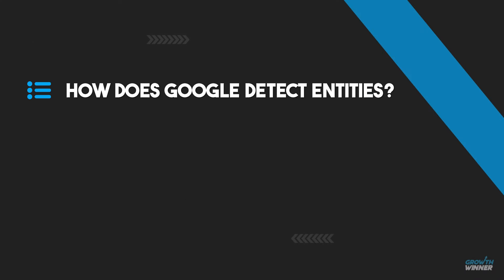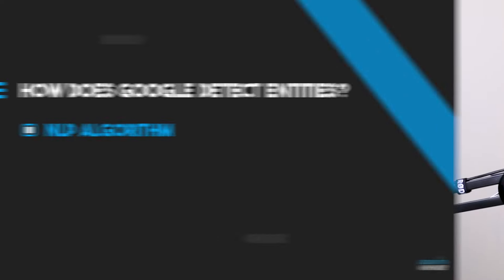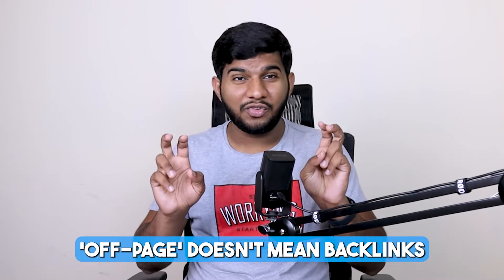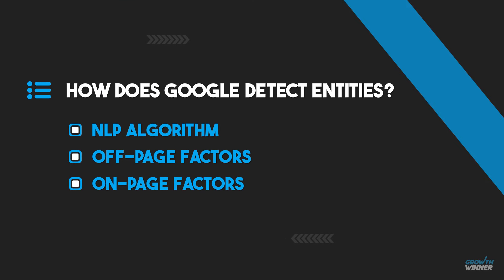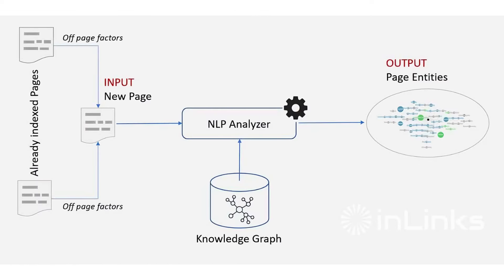How does Google detect entities? Number one, an NLP algorithm — similar to its API that detects almost 100% of people, places, and organizations, but very few concepts or things. Number two, off-page factors. This means Google considers what entities are mentioned on other pages of your website to understand the context better, helping Google figure out more precisely what each page is about. Here, off-page doesn't mean backlinks — it simply means the other pages of the same site providing context. Number three, on-page factors such as schema.org markup, to explicitly specify the entities present on the page.